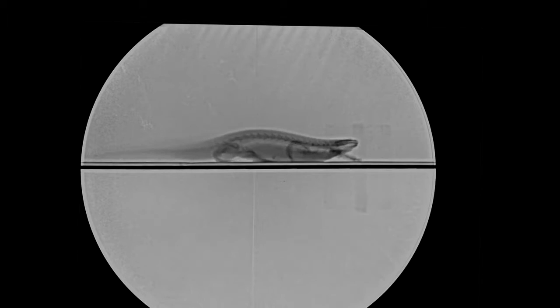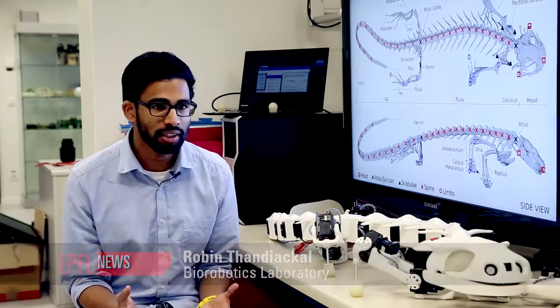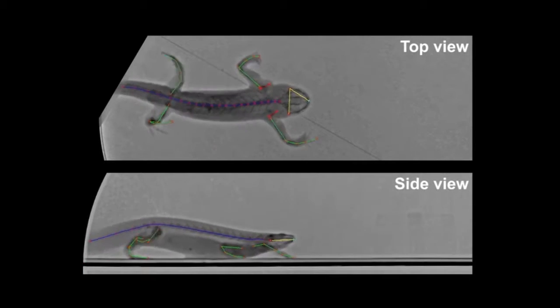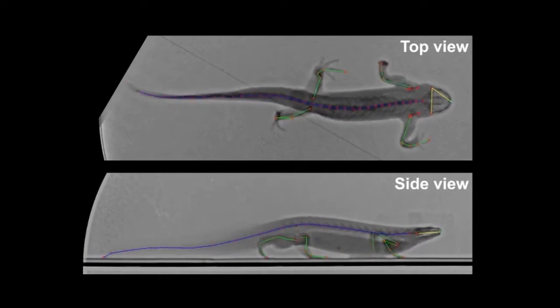The species is called pleurodelis. We looked at detailed x-ray recordings from the animal so we could track the bones in 3D space. That enabled us to create a very detailed model of the movements of the bones and of the animal.